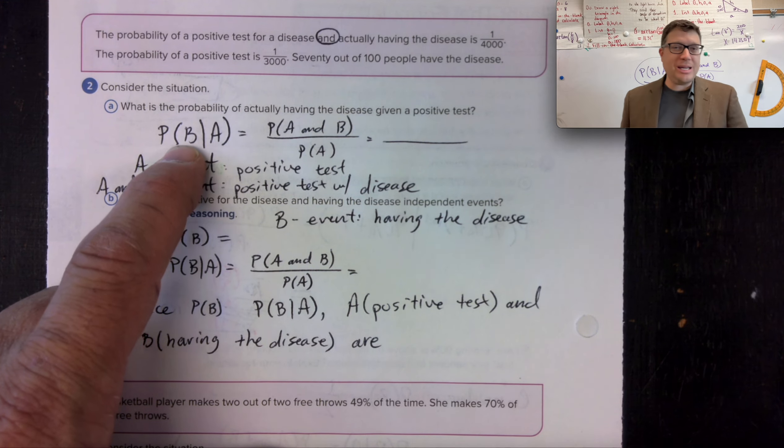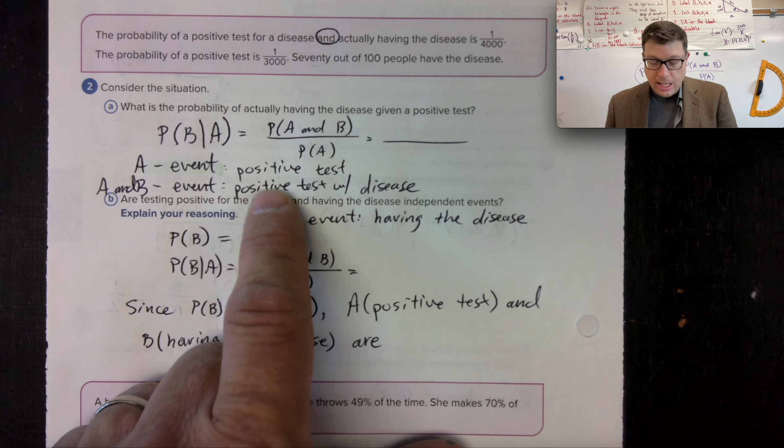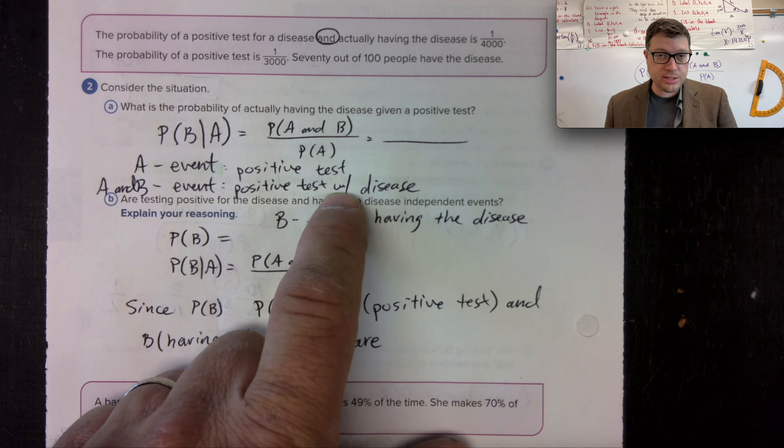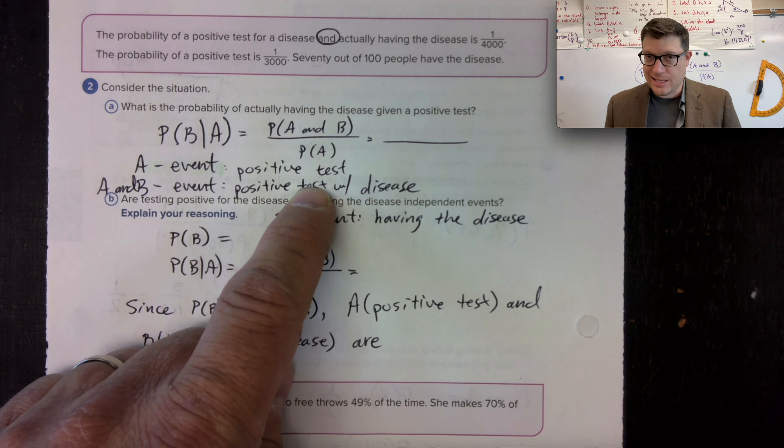The probability of B given A. So A and B is a positive test with the disease, while A is the event of just getting a positive test.